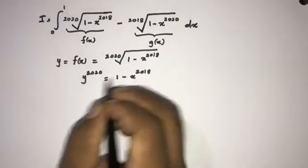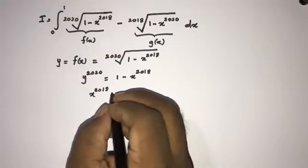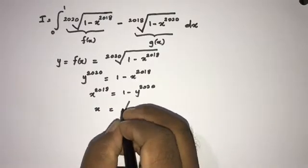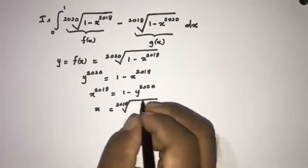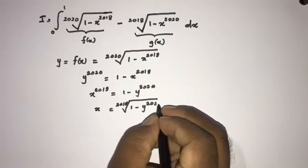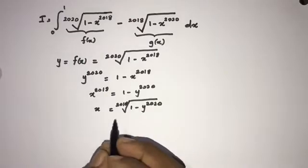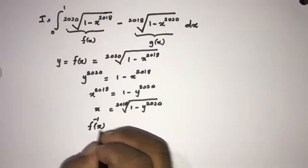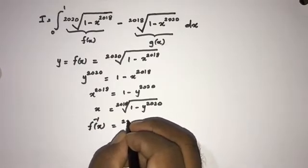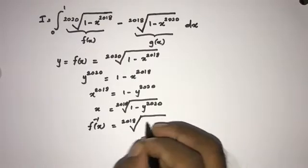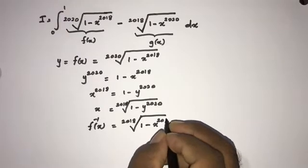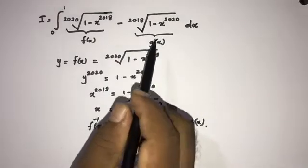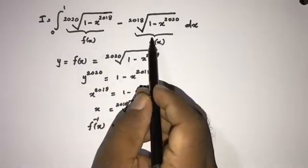Now we can isolate x, so x²⁰¹⁸ = 1 - y²⁰²⁰, which means x = 2018√(1-y²⁰²⁰). Now we know this is the inverse of f(x).